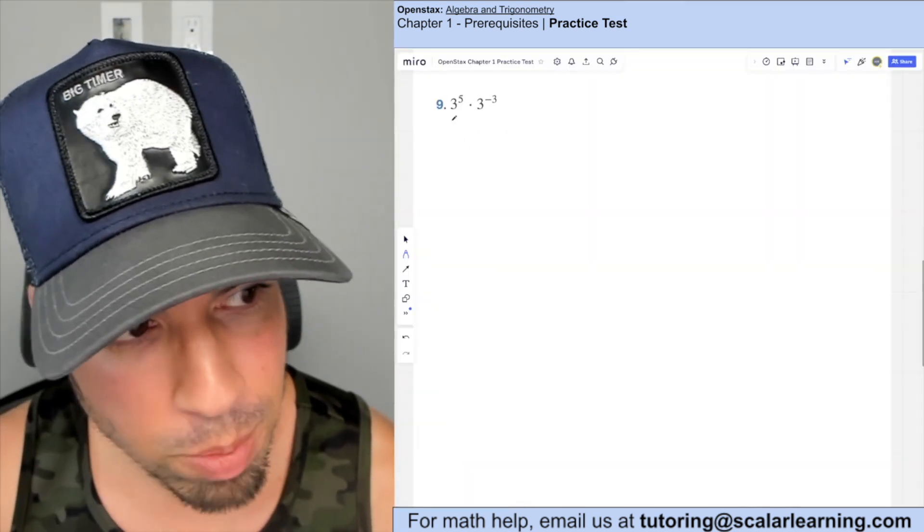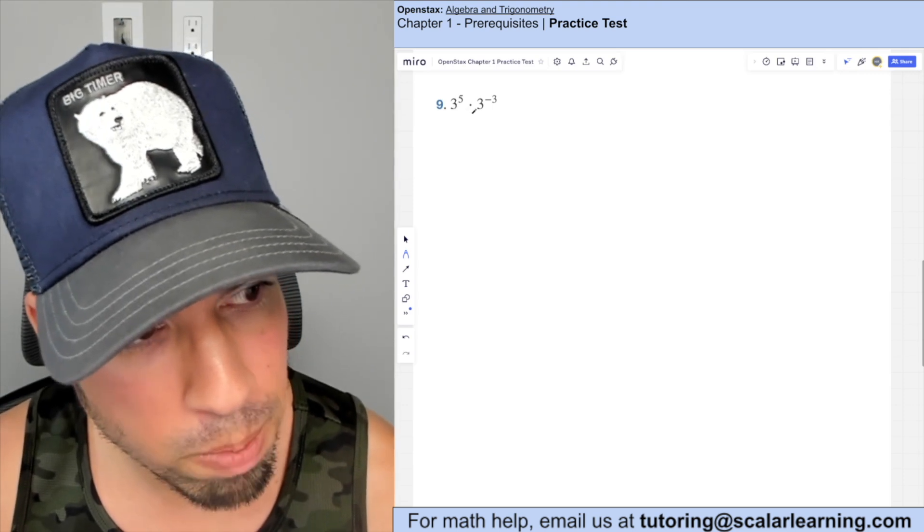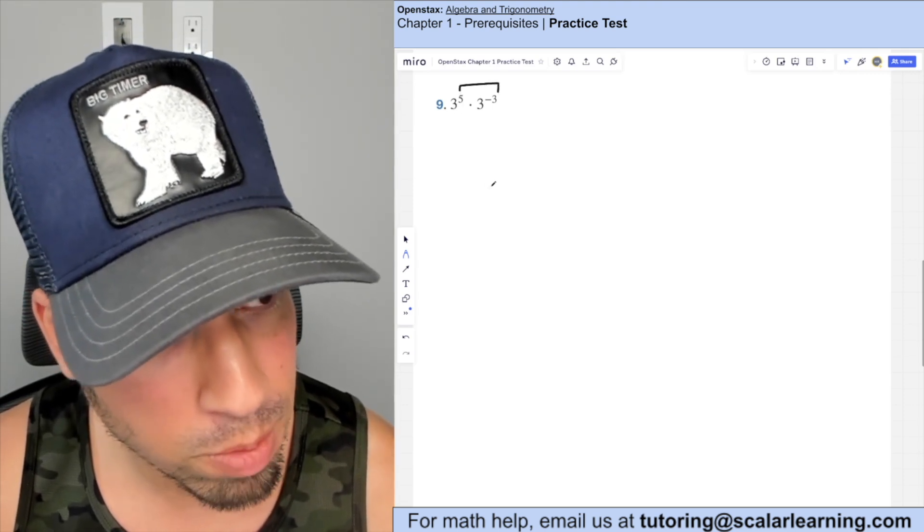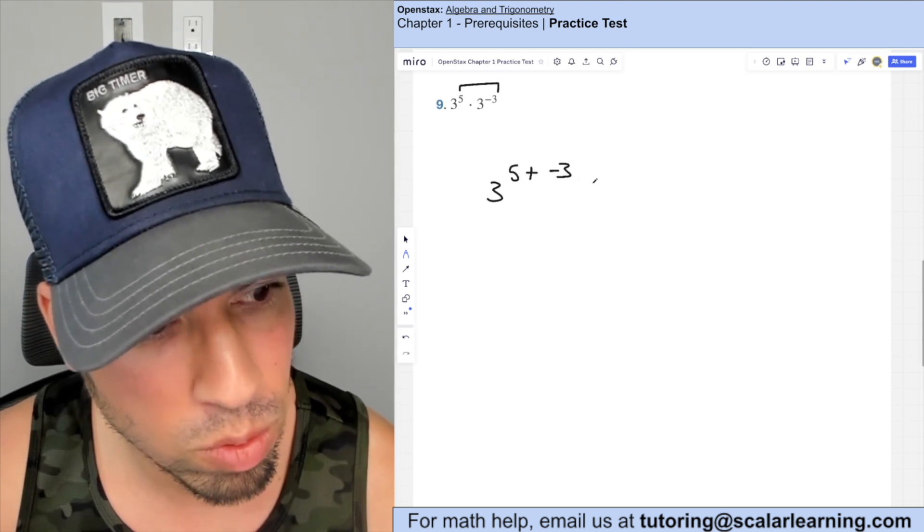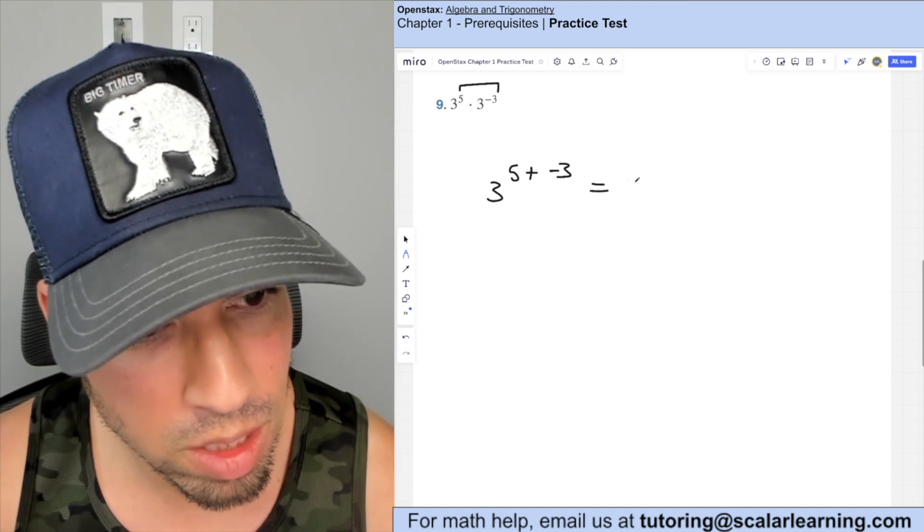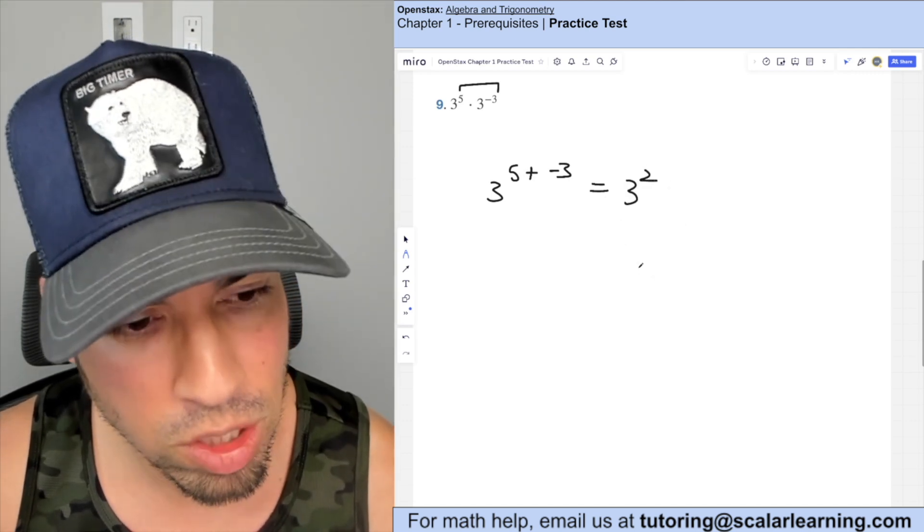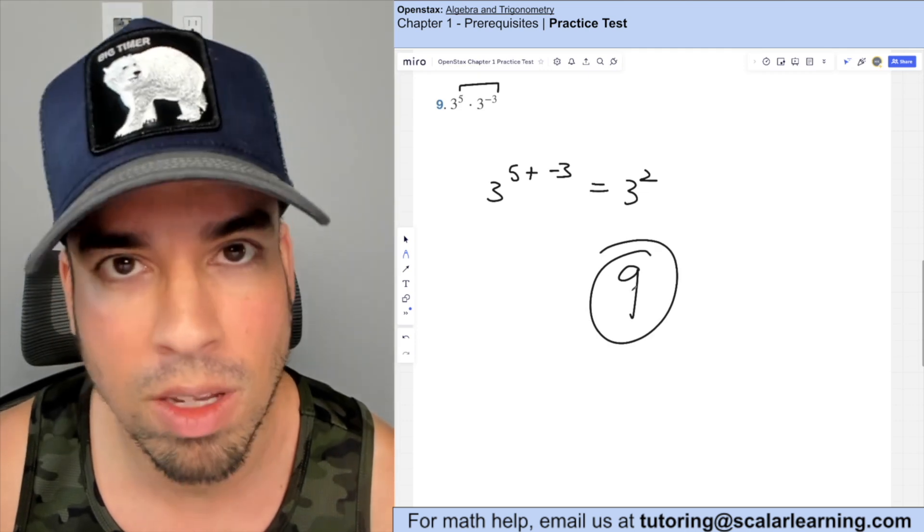So here we're going to use our exponent rules, which says if two bases that are identical are multiplying, we can just add those exponents. So it becomes three to the five plus negative three, which is of course, five plus negative three is two and three squared is three times three, which is nine. Boom, done.